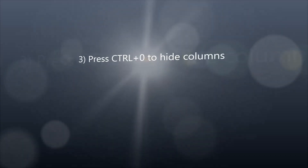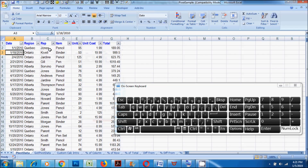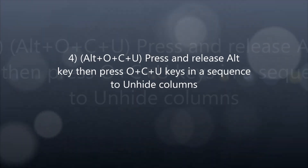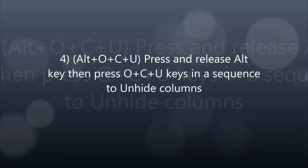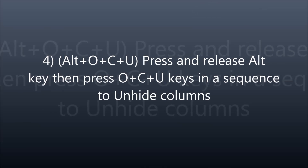3. Press CTRL plus 0 to hide columns. 4. Press and release the ALT key, then press O plus C plus U keys in a sequence to unhide columns.